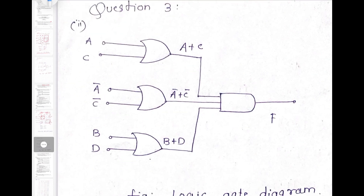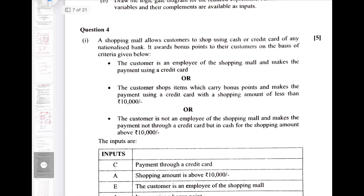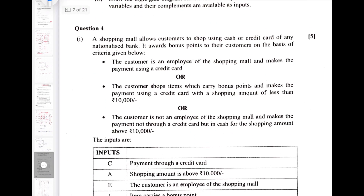The signal and complement of the signal are provided directly, so A and A̅ signals are directly present. We have to join them with an OR gate and then combine with an AND gate.